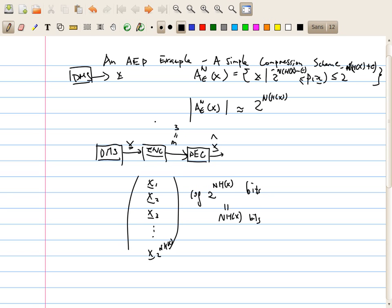And we call that the length of the sequence is n, so therefore the number of bits needed per sample would be simply n H(x) over n or equal to H(x) bits per sample.